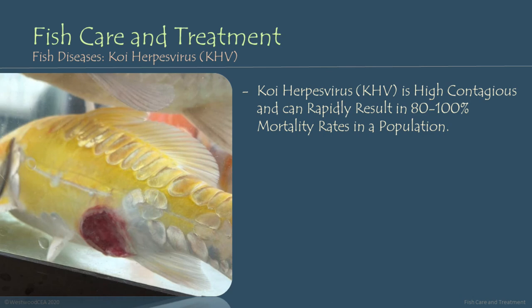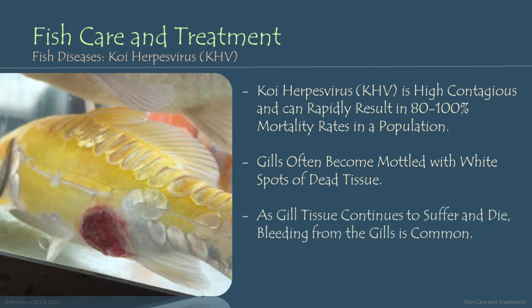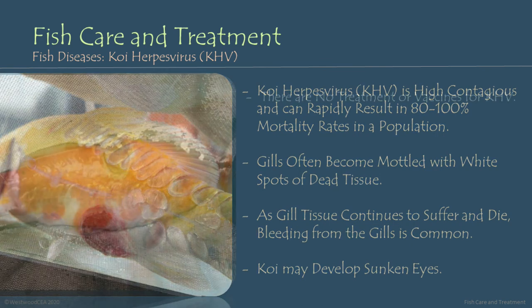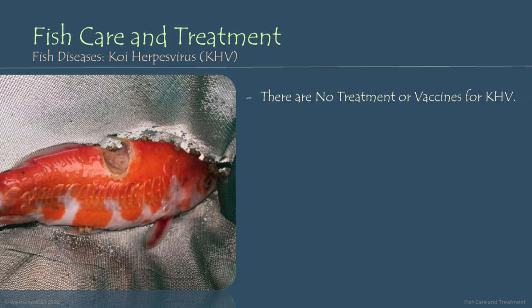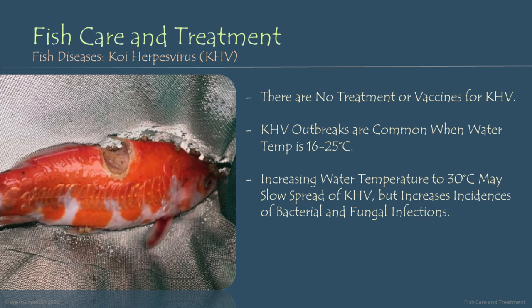In individuals suffering from koi herpes virus, you'll notice that the gills become mottled with white spots of dead necrotic tissue. As the gill tissue continues to suffer and die, bleeding is very commonly seen from the gills of the infected fish. Additionally, infected koi may develop sunken eyes. As of right now, there are no good treatments or vaccines for koi herpes virus. KHV outbreaks are common when the water temperature is between 16 and 25 degrees Celsius. Interestingly, increasing the water temperature to about 30 degrees Celsius may actually slow the spread of KHV, but this can increase incidences of bacterial and fungal infections attacking the open wounds on infected fish.